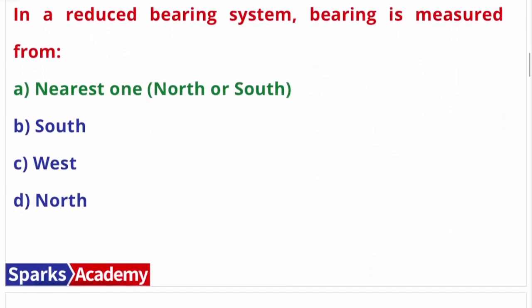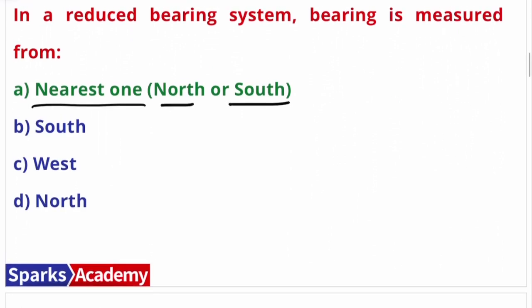In a reduced bearing system, bearing is measured from the nearest north or south direction. We choose north or south as the reference point, whichever is nearer, and measure from there. That is the reduced bearing system. These are the theory content points we will cover.